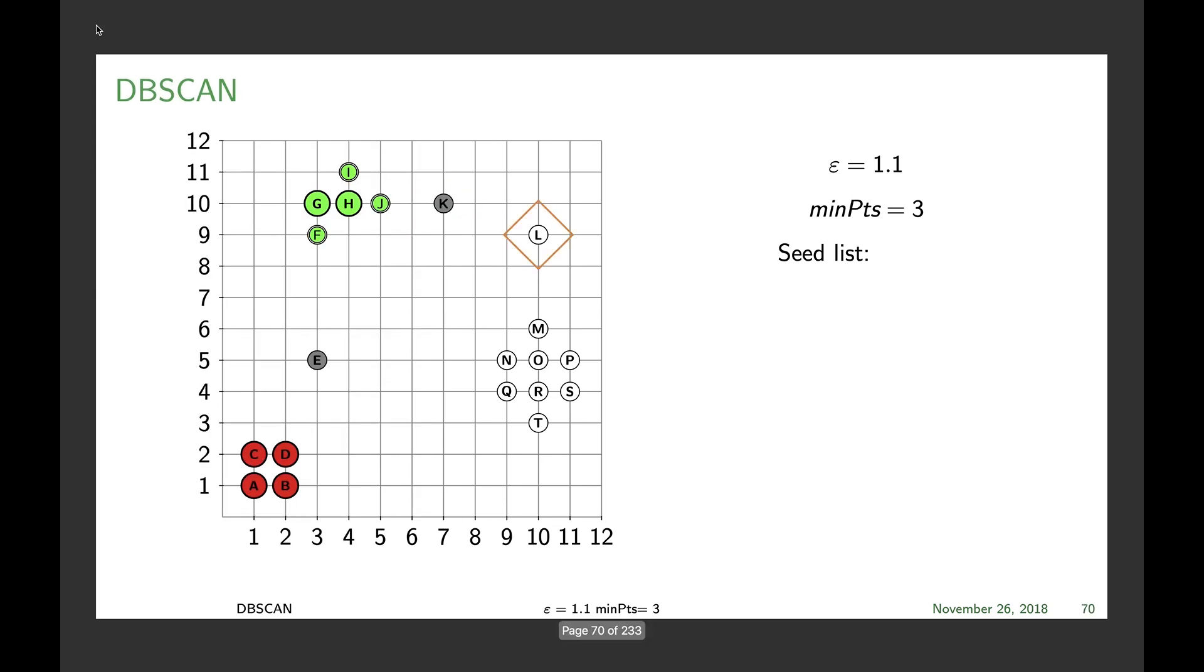K remains noise, L remains noise, and same as before M becomes a noise point for the moment. We then check O and see O is a core point. We check R, R is a core point. Q becomes a core point because there are three points in epsilon range, and all the other points do as well. And there's our clusters.